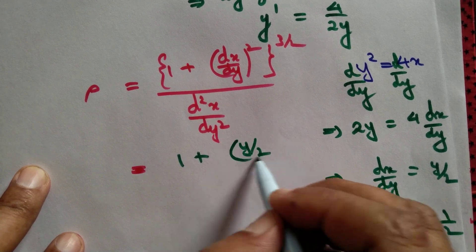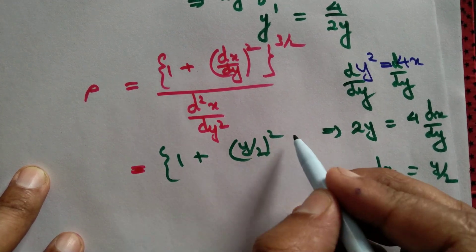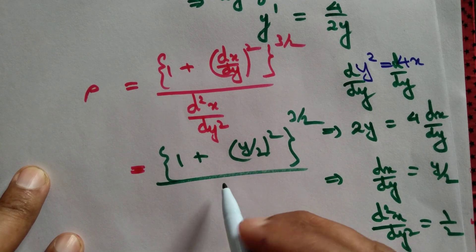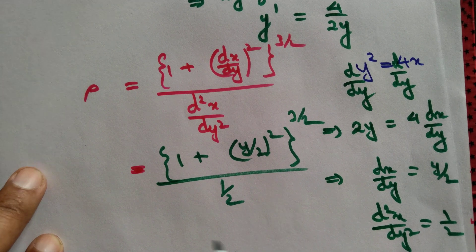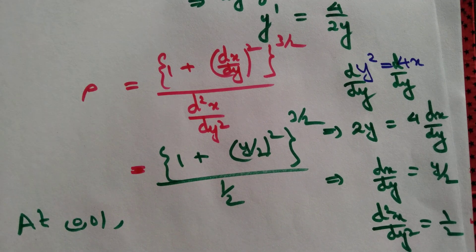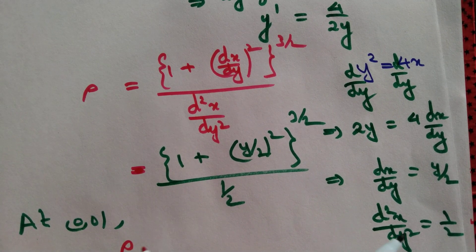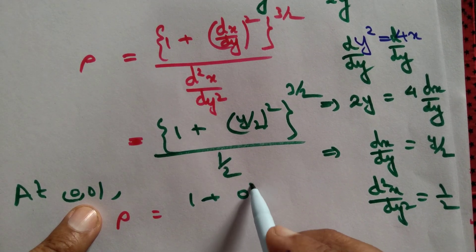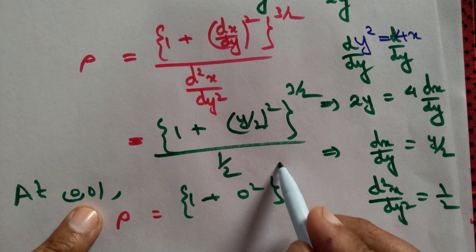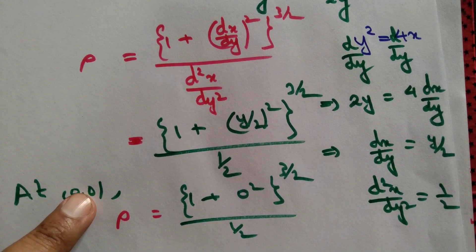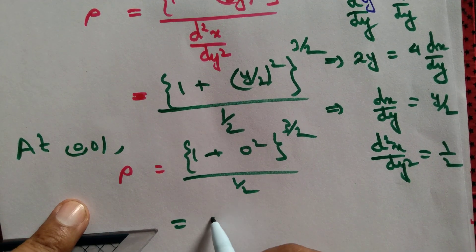Substituting into the formula: ρ = (1 + (y/2)²)^(3/2) / (1/2). At the origin, y = 0, so ρ = (1 + 0)^(3/2) / (1/2) = 1 / (1/2) = 2. Therefore, the radius of curvature at the origin is 2.